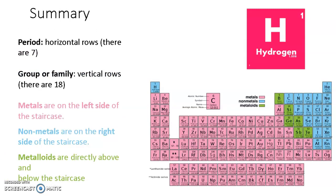There is a quick summary of what we have learned so far. So we know periods, they're horizontal rows, like that, going from metal to non-metal. Groups or family, they're vertical rows, there are 18 of them. Metals are on the left side of the staircase, non-metals are on the right side of the staircase. Metalloids are directly above and below the staircase.